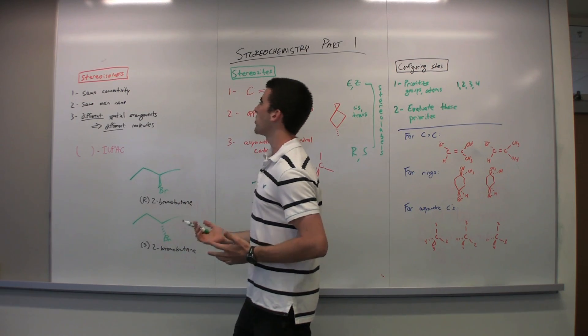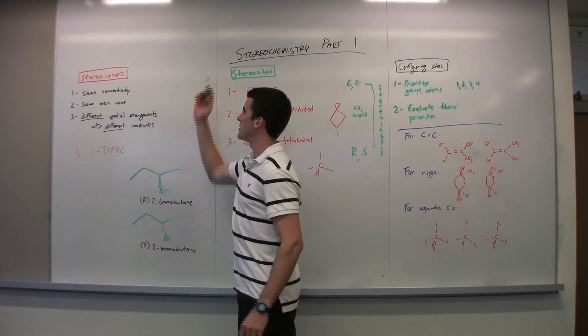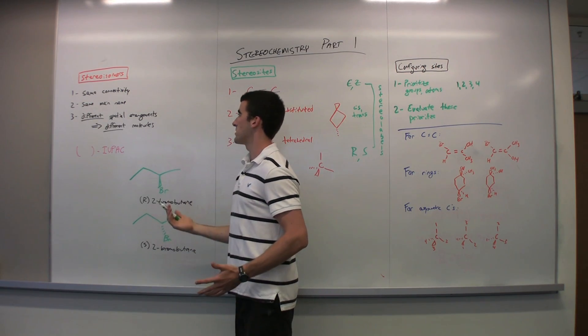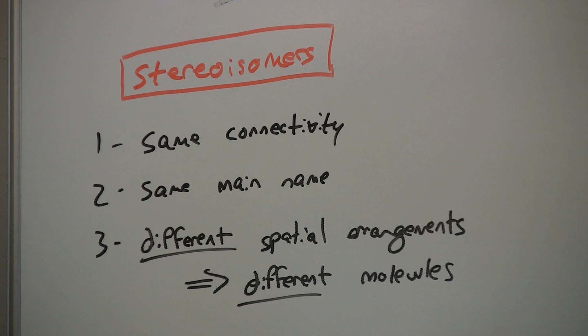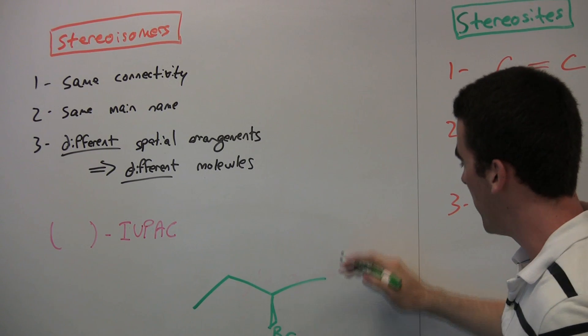So what makes a stereoisomer? There are three conditions: they have the same connectivity, they have the same main IUPAC name, but the third and most important part is that there are different spatial arrangements within that molecule, and thus they are different molecules. Let's look at an example.